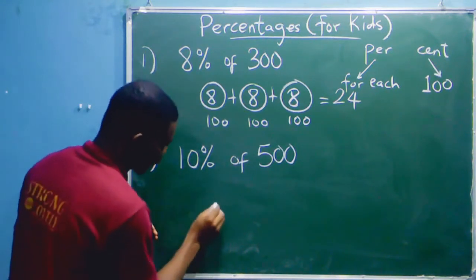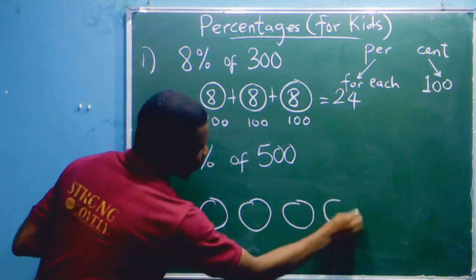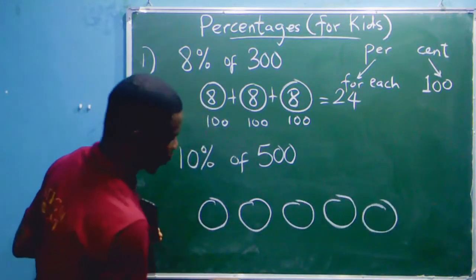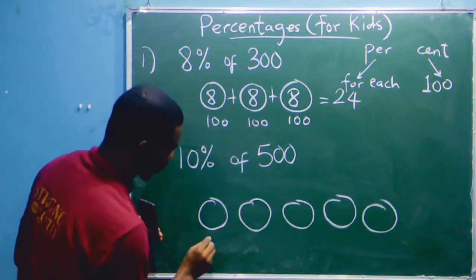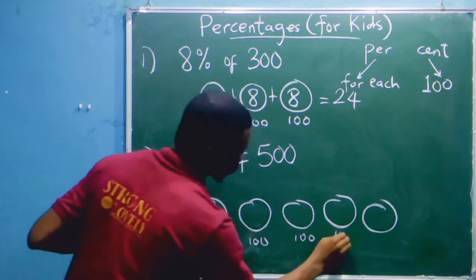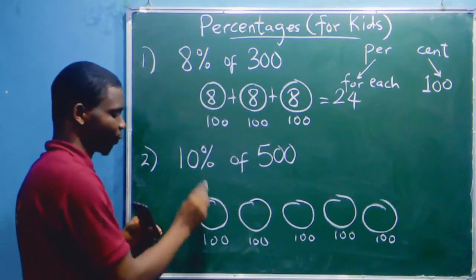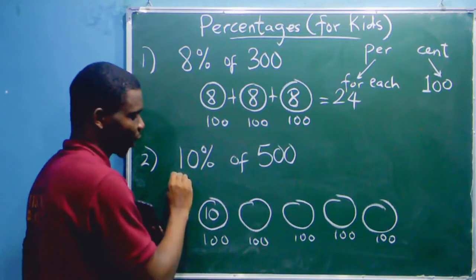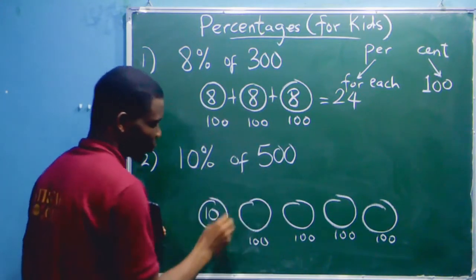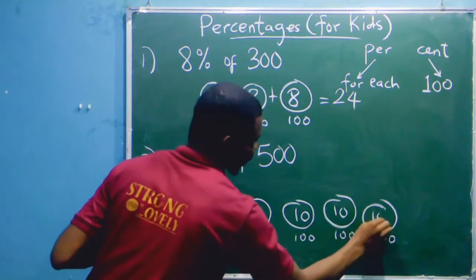10% of 500. For each 500... I'm going... this is 1, 2, 3, 4, 5. We have 100, 100, 100, 100, and 100. So for each 100, what do you have? 10. 10 in each 100.